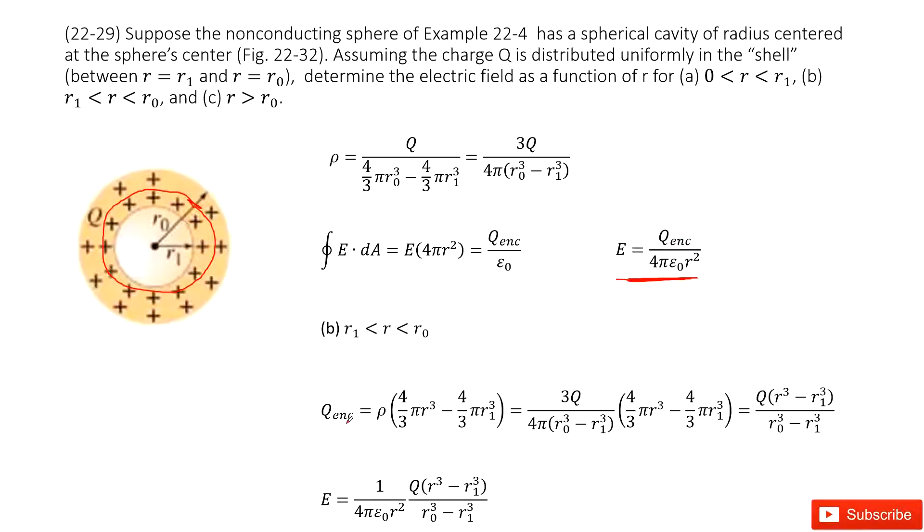We need to find enclosed charge located inside this Gaussian surface. This one, we use the charge density times the volume for this shell from R₁ to R.